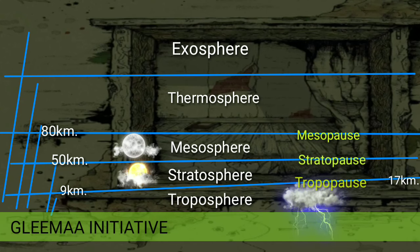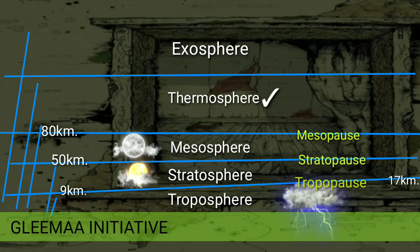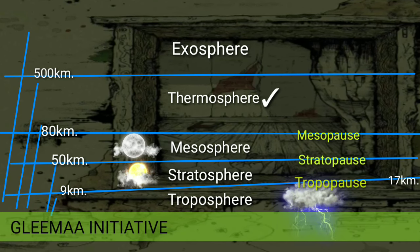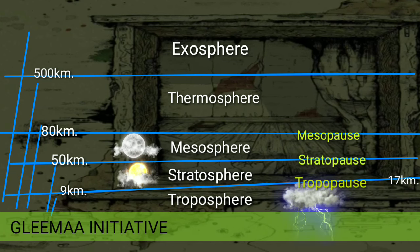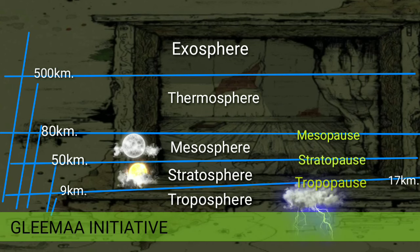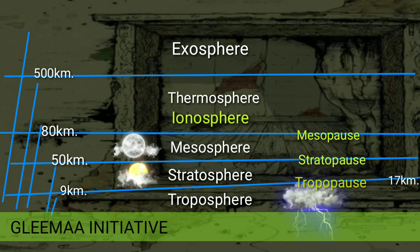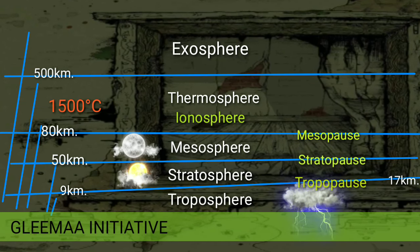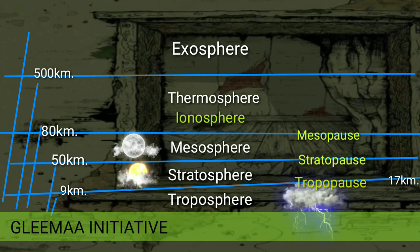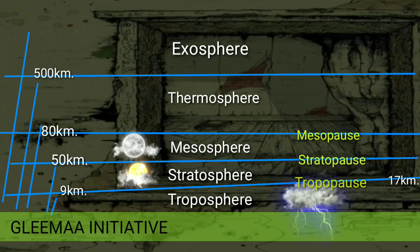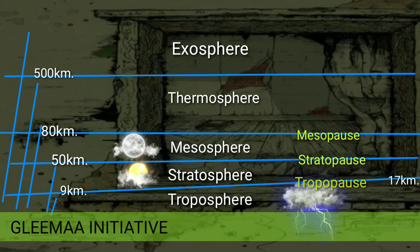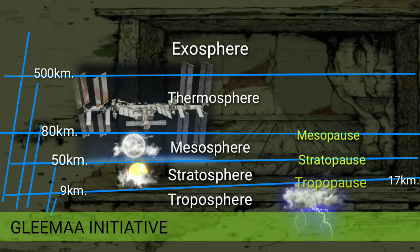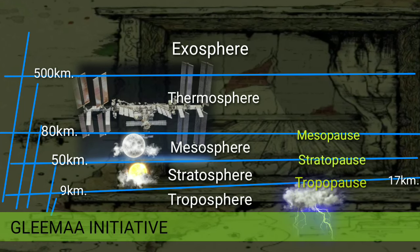Now talking about the second highest layer of Earth's atmosphere, that is thermosphere. It extends from about 80 kilometers up to an average of 500 to 1000 kilometers. The lowest part of thermosphere, from 80 to 550 kilometers above the Earth's surface, contains the ionosphere. The temperature of this layer can rise as high as 1500 degrees Celsius. This layer is completely cloudless and free of water vapor. Electrically conducting radio signals are reflected in this layer. The International Space Station orbits in this layer. The thermosphere is bounded by an upper limit called thermopause.